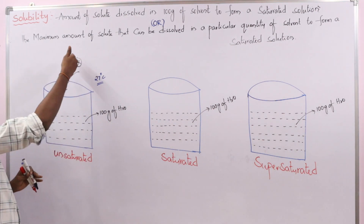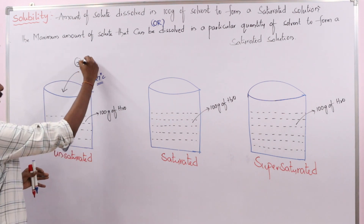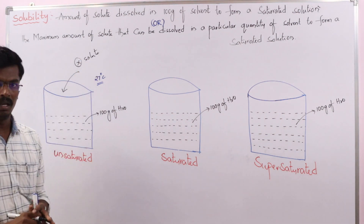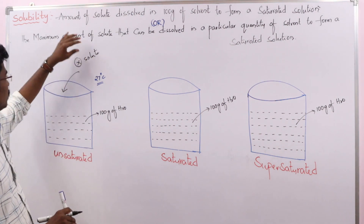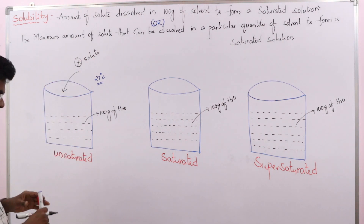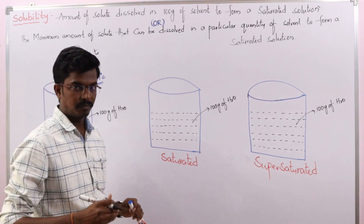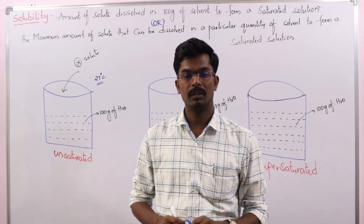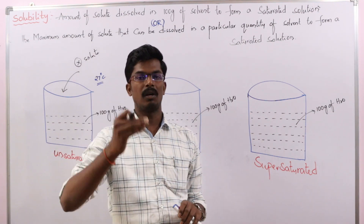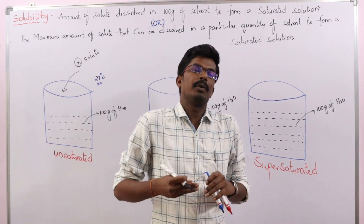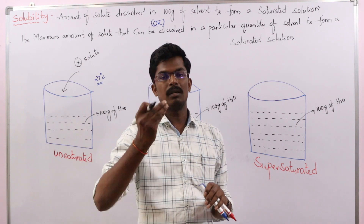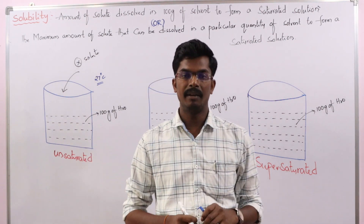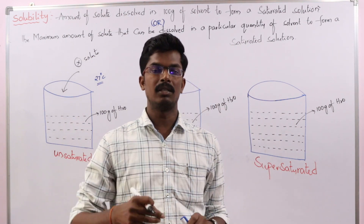So now I am going to add some amount of solute. The solubility varies depending on the solute. For example, in a beaker containing 100 grams of water, I am adding some salt. When you add a small amount of solute — that is, the salt — it easily dissolves in the water.